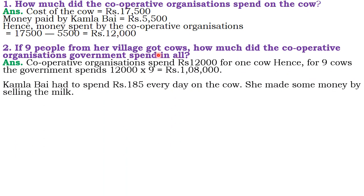If 9 people from the village got cows, how much did the cooperative organization spend in all? Rs. 12,000 multiplied by 9: 12 × 9 = 108, and here 3 zeros are added. But for you, you have to show the proper calculation. So Rs. 1,08,000 is what the cooperative organization has to spend to purchase 9 cows for 9 people of the village.